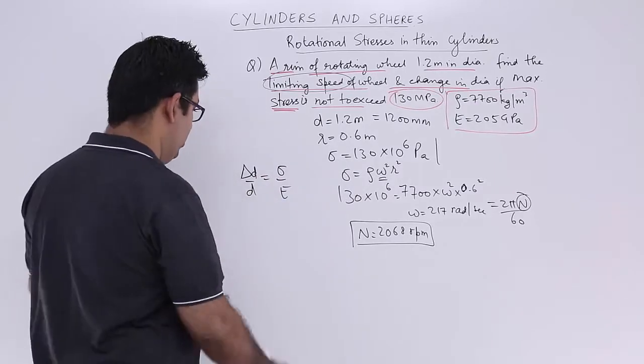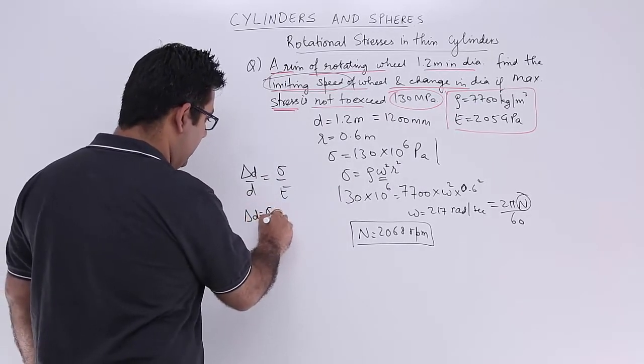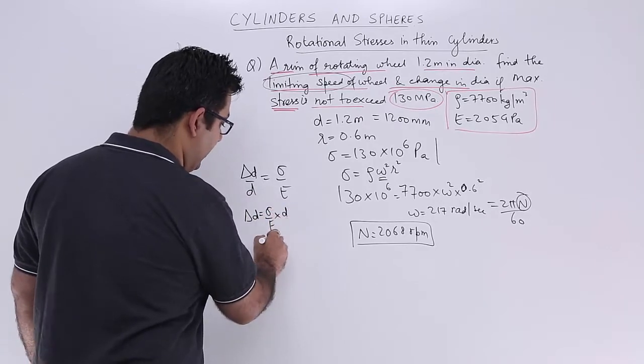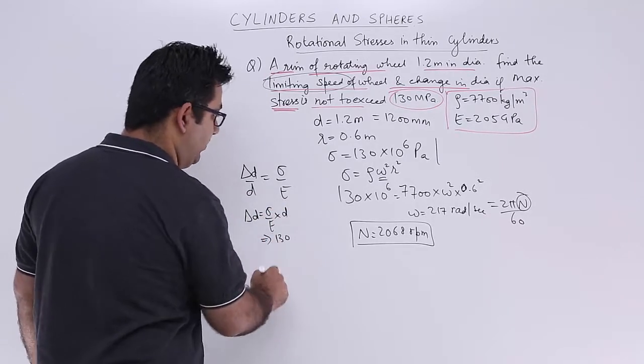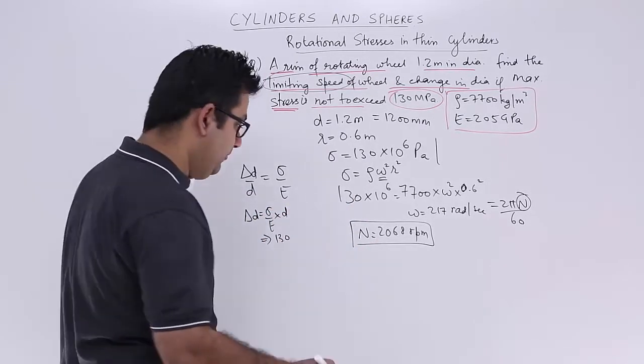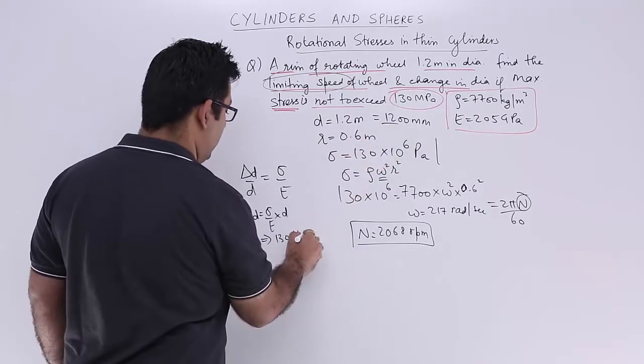You can find ΔD from here, which is (σ/E)×D. Sigma is 130 MPa. Let's take it in MPa only. D would be 1200 mm.